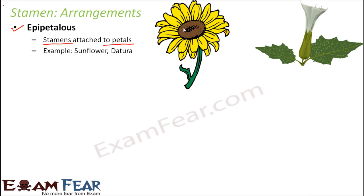In sunflower, if you look at the center, you can see stamen attached to the petals. Similarly in datura, the white-petaled flower shows thin protruding structures — the stamen — also attached to the petals. So if the petal is like this, the stamen would be attached to it. This is called epipetalous — 'epi' meaning attached to petals.